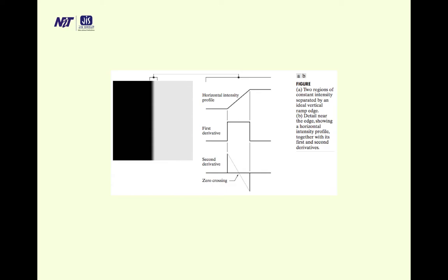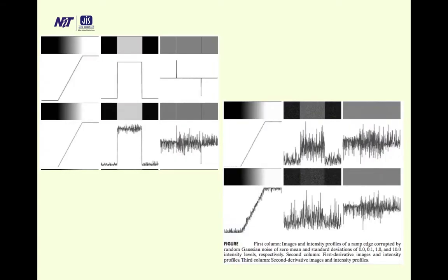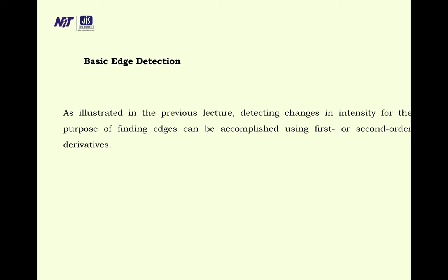These profiles are very important: the first derivative of a ramp is a step, while the second derivative gives a sharp change — two impulses in opposite directions, one on the positive side and another on the negative side, with a zero crossing in between. This is the different profile, and with noisy contamination and how it changes due to standard deviation has already been discussed previously.